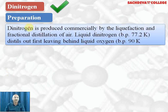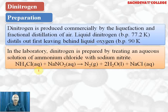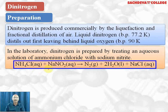Let's take up dinitrogen. These days we call nitrogen as dinitrogen when it is in the form of a molecule. It is produced commercially by fractional distillation of liquid air. Liquid dinitrogen, with boiling point 77.2 Kelvin, distills out first, leaving behind liquid oxygen. These are the main components of air. In the laboratory, we prepare it by the reaction of ammonium chloride and NaNO₂.